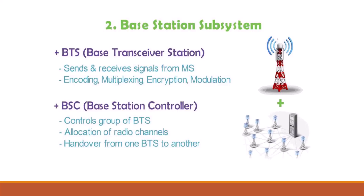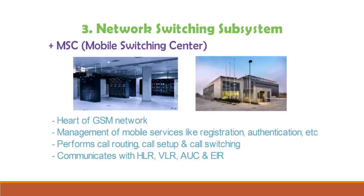The third subsystem is Network Switching Subsystem and it contains five components. The main element is Mobile Switching Center. It manages mobile services like registration, authentication, and performs call routing, call setup, and call switching. It is the heart of the GSM network. It communicates with other NSS components like HLR, VLR, etc.